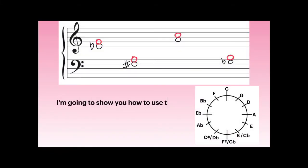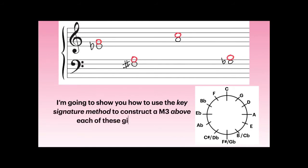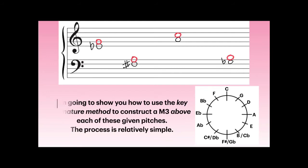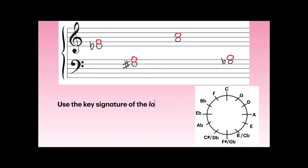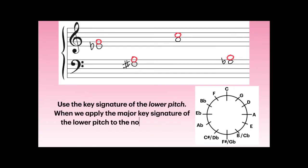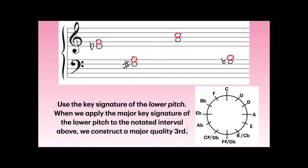I'm going to show you how to use the key signature method to construct a major third above each of these given pitches. The process is relatively simple. As you can see, we start by putting it on the staff. Use the key signature of the lower pitch. When we apply the major key signature of the lower pitch to the notated interval we've written above, we construct a major quality third.